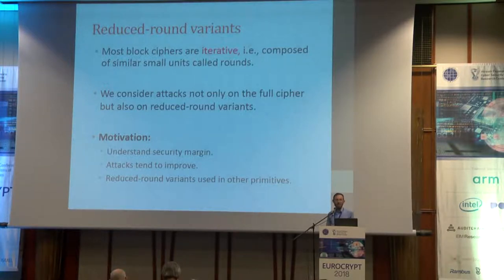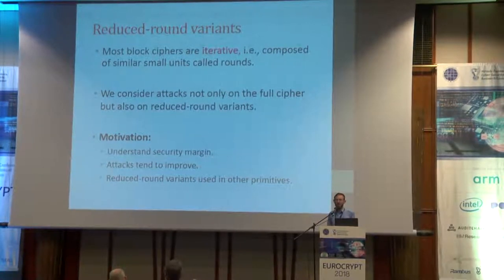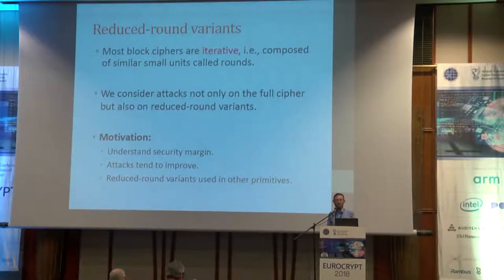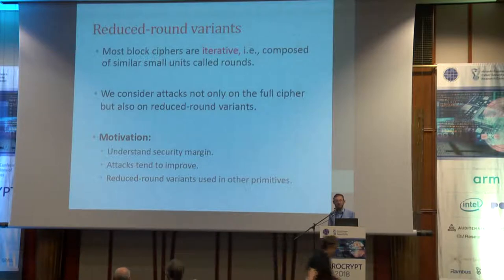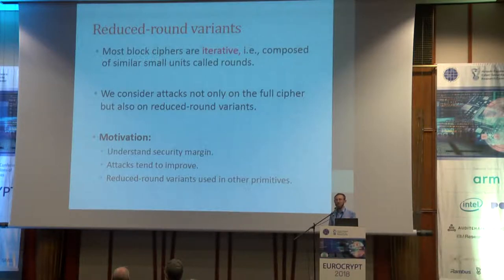If somebody wants to attack the cipher, they attack the full cipher, but if this doesn't work, we try to attack reduced round variants. Why? First, this helps to understand the security margin. Also, the attacks tend to improve. Especially in the case of AES, reduced round variants are used in other primitives as a building block, so we want to understand the security as well.